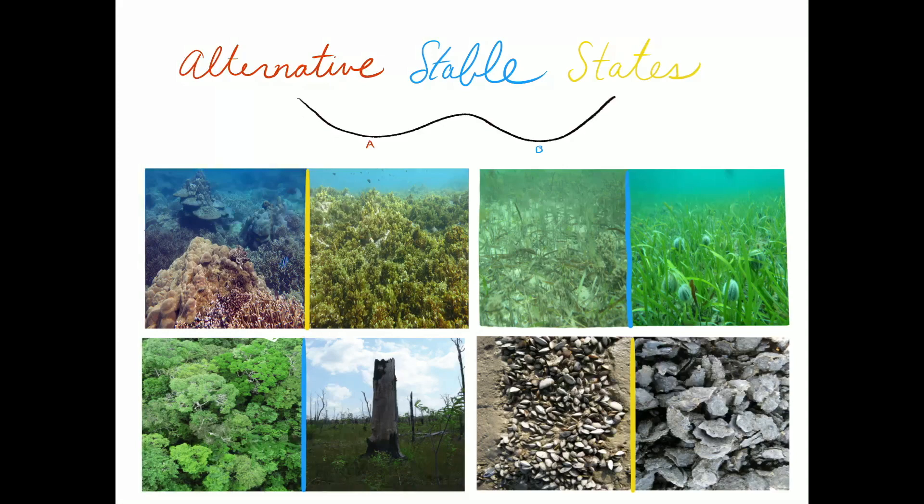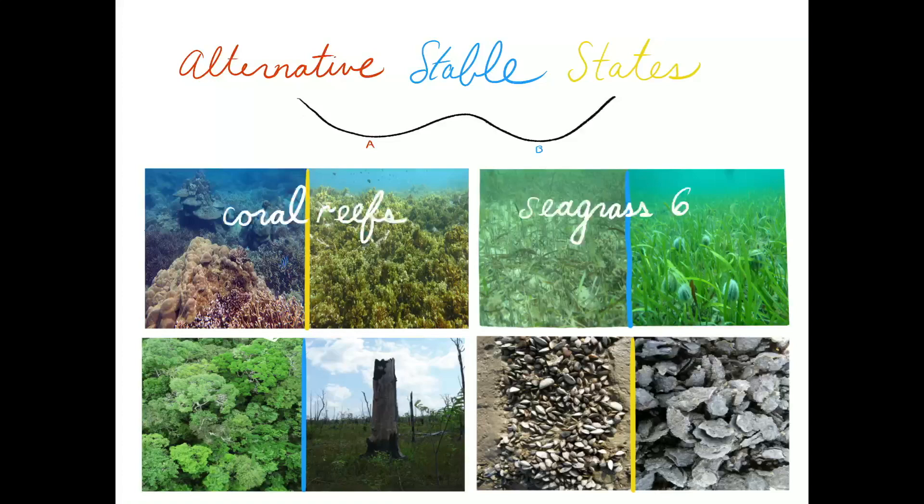Various ecosystems are suggested to have alternative stable states and tipping points. Examples include coral reefs, seagrass beds, forests, and mussel beds.